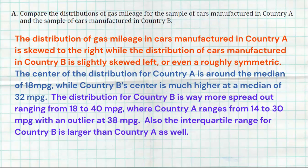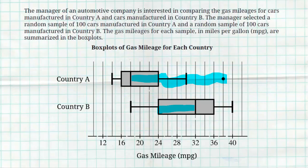Next up, I want to talk about the centers. So the center for the distribution of Country A is around the median of 18 miles per gallon, while Country B's is much higher, see that comparative language there, at a median of 32. That's kind of the cool thing here about these box plots, is we could see that the median is right here for 18 for Country A, and 32 for Country B. So noticing that Country B is a much higher median.